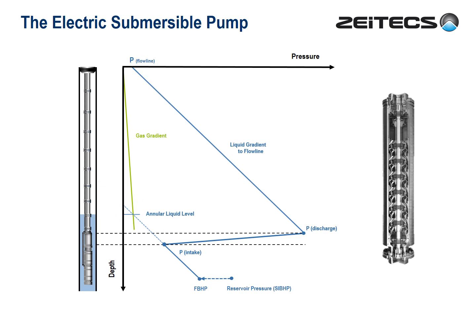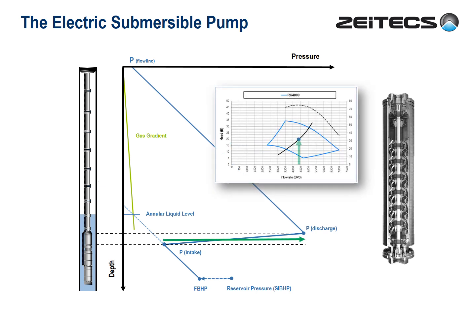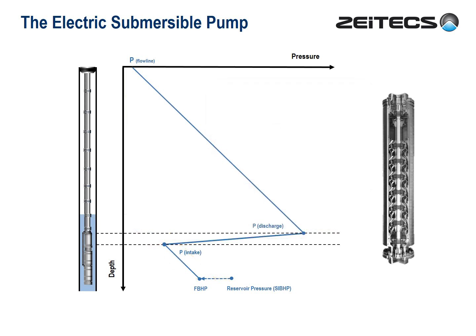And here's the green arrow. Now let's look at the ESP operating envelope — and here again is the green arrow. With variable speed, we have a level of flexibility. We can speed up the pump and increase the draw down and flow rate; conversely, we can slow down the pump and reduce the draw down and flow rate. I should admit again that I've been oversimplifying — in reality, with friction, compressibility, and gas breakout, the gradients we see are actually curved. But I think you get the message.